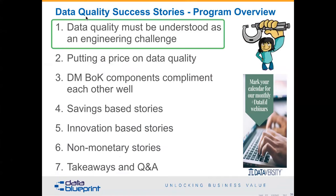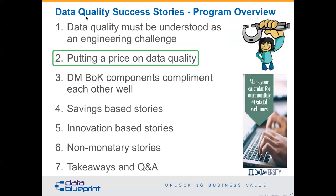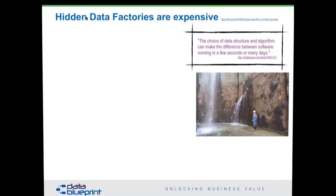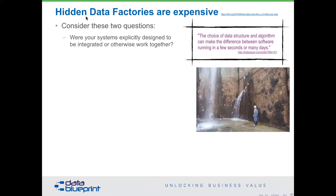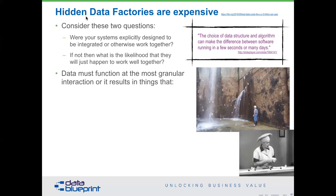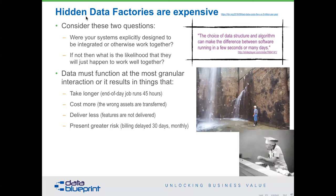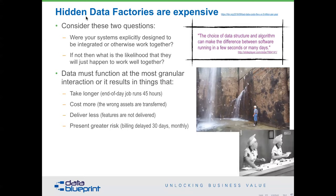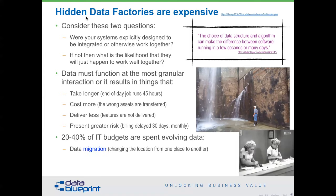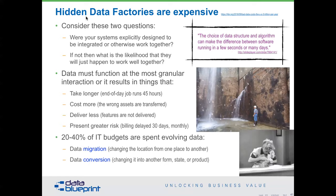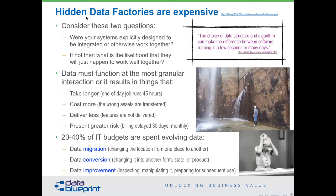But we also need to be able to put a price on data quality. My colleague Tom Redman coined a term called the 'hidden data factories.' Consider: were your systems explicitly designed to be integrated or to work together? If not, the chances that they will just happen to work together are not very high. Data has to function at the most granular level, and problems result in things that take too long, cost more, or deliver less — representing greater risk. In fact, 20% to 40% of all IT budgets are spent evolving data in one form or another — migrating data, converting data, or improving data because it's insufficient for use.